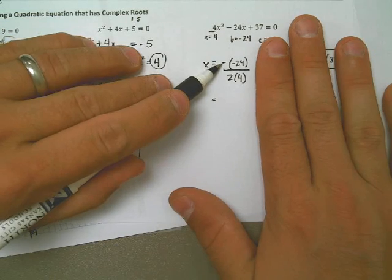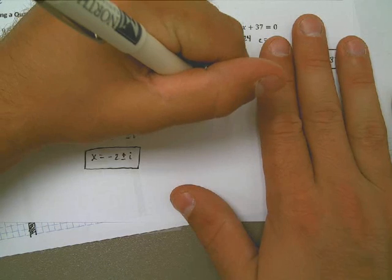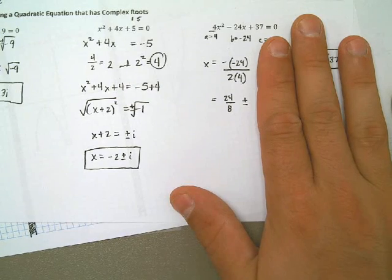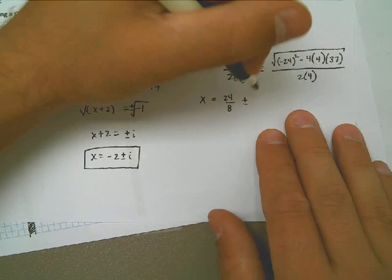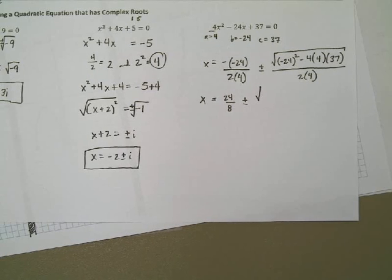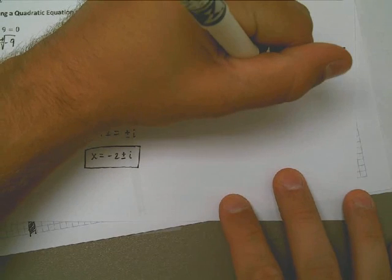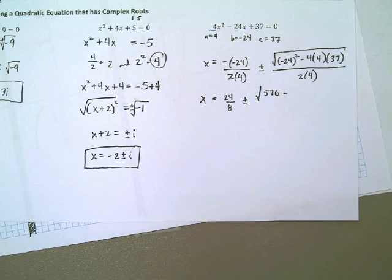I wish I had a calculator. Pause for a second. Here we go. How about that? I've got one right here. So 24 squared is 576 minus 4 times 4 times 37 is 592. And that is all over 2 times 4, which is 8.